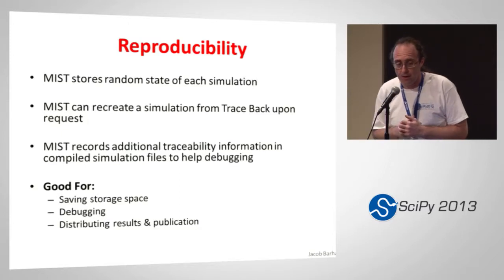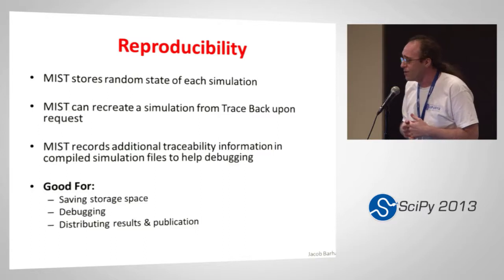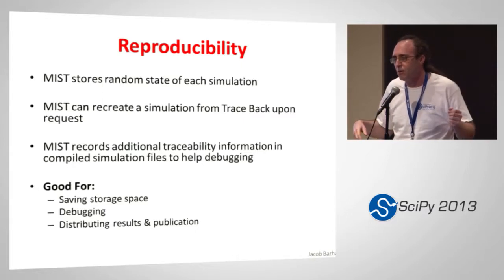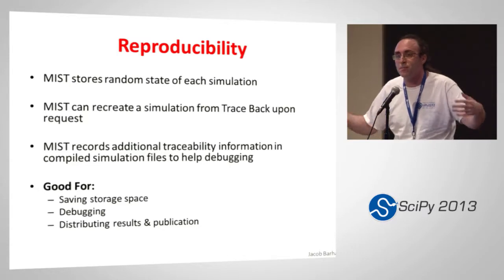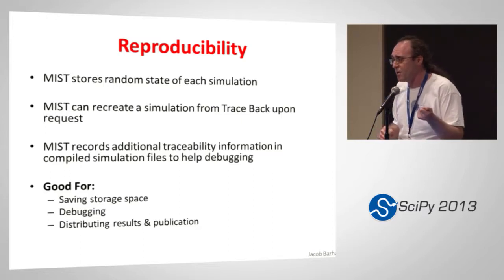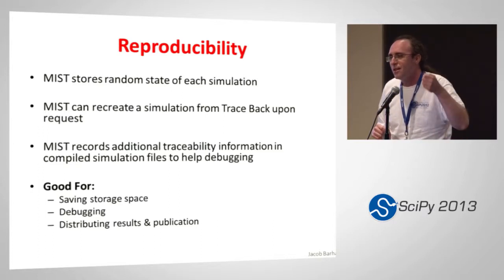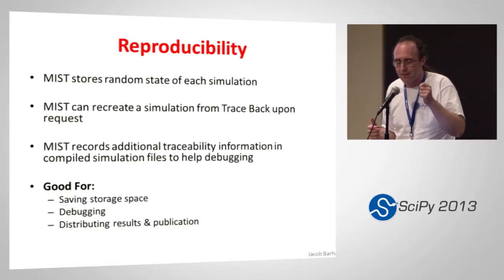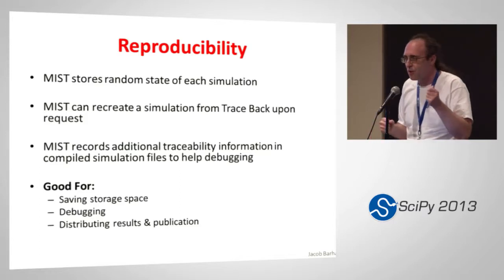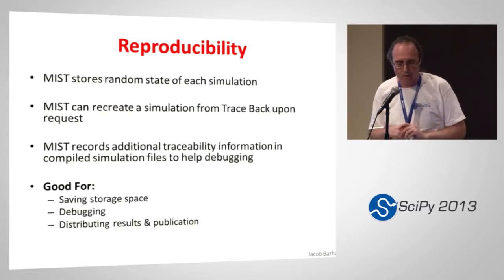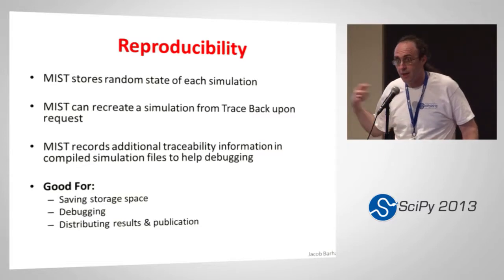An effort has been made to make MIST reproducible. MIST stores the random state of each simulation, which is especially important for microsimulations since you create a lot of data during the simulation. Running it on a cluster and then pulling it back or copying it to another hard drive takes time. Since the only thing that drives the entire simulation is the random state, if you record the random states of all simulations, that's enough to reproduce everything. You only need to save the random state, the traceback information, and the end results. MIST has the capability to reproduce it, and it's very important if you want to publish results.